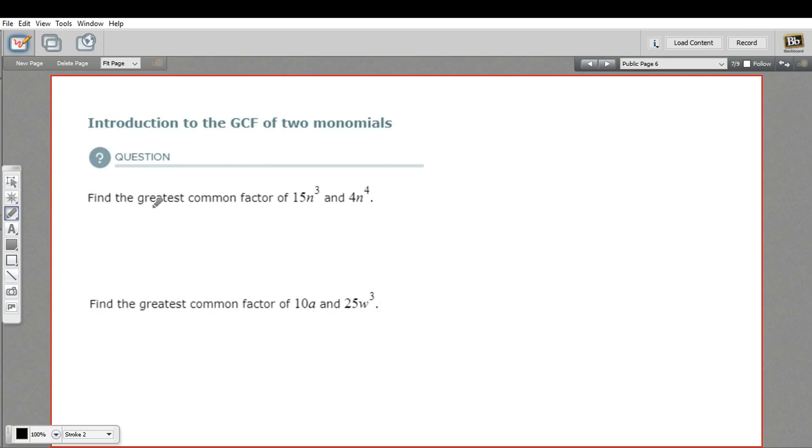In these problems, we're trying to find the greatest common factor of two monomials, so a number multiplied by a variable to a certain power. So these two expressions, we want to ask, what could we divide both of them by and still have the numbers come out even? What's the biggest thing we could divide them both by?